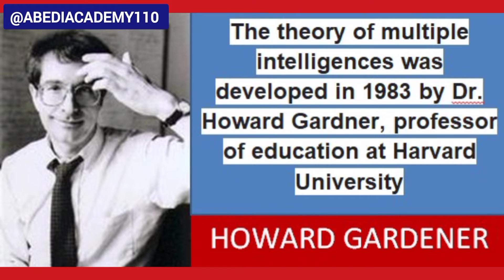Through this theory, Gardner says that people are not born with all of the intelligence they will ever have. This theory challenges the traditional notion that there is one type of intelligence — IQ, or intelligence quotient, sometimes known as G for general intelligence — that only focuses on cognitive abilities. But this theory says that there are multiple intelligences and different types of intelligence a child may possess.